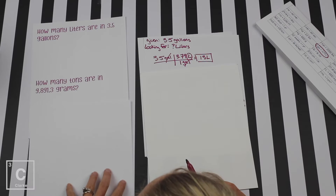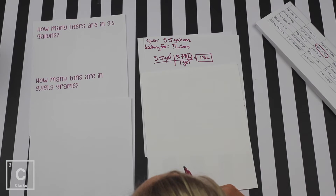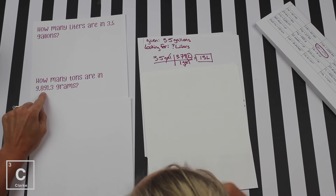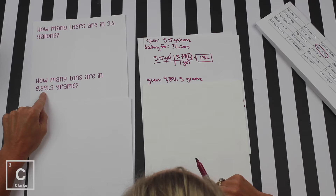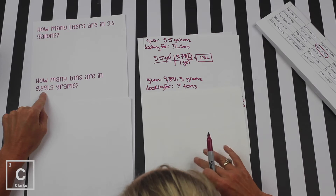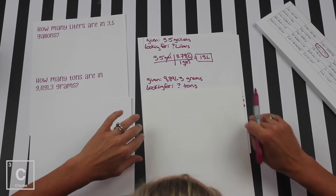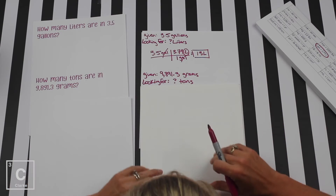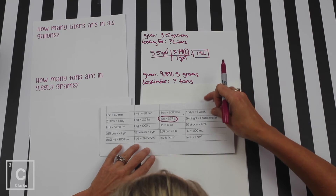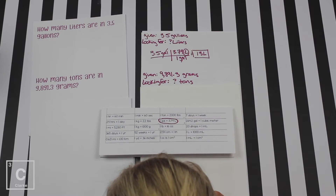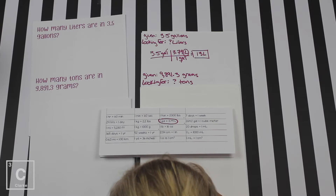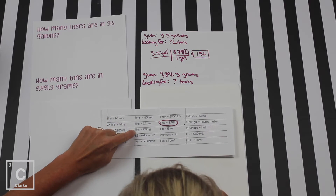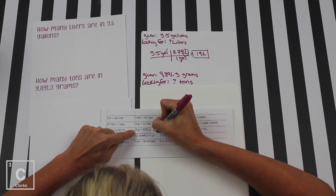Let's work the second problem: how many tons are in 9,891.3 grams? Our given is 9,891.3 grams, and we're looking for tons. Again, I think it's important to write that down on all problems — it seems like a little extra, but it will definitely help you figure out what you need to do. Now let's look at our conversion chart and make a plan. We're starting with grams, so we need to find a conversion with grams in it, and here is the only one on my chart — so this must be the right one and will be our first conversion factor.